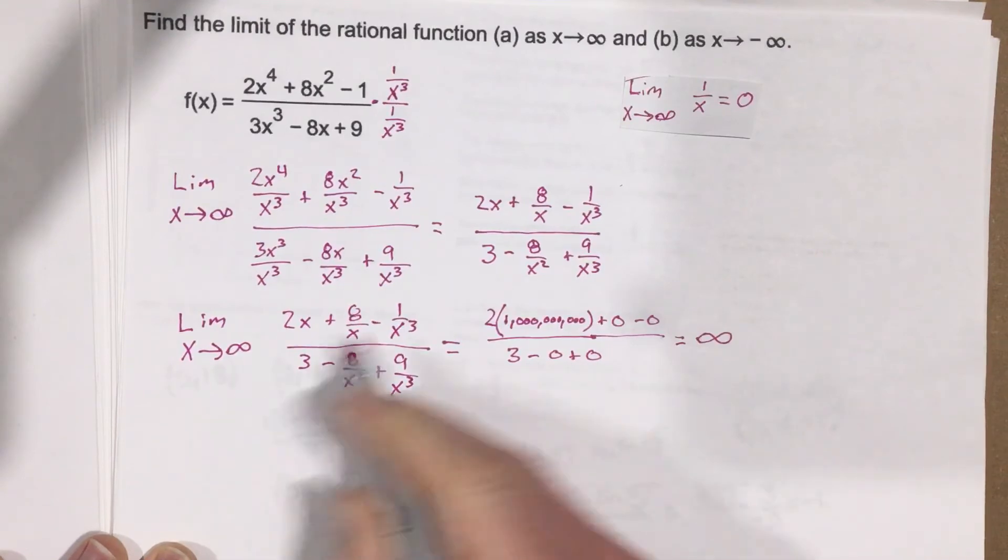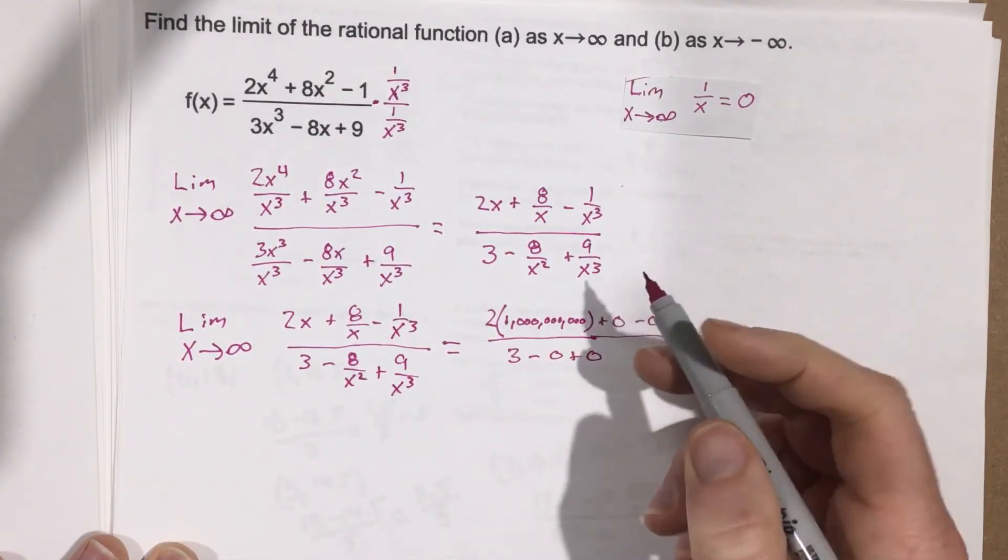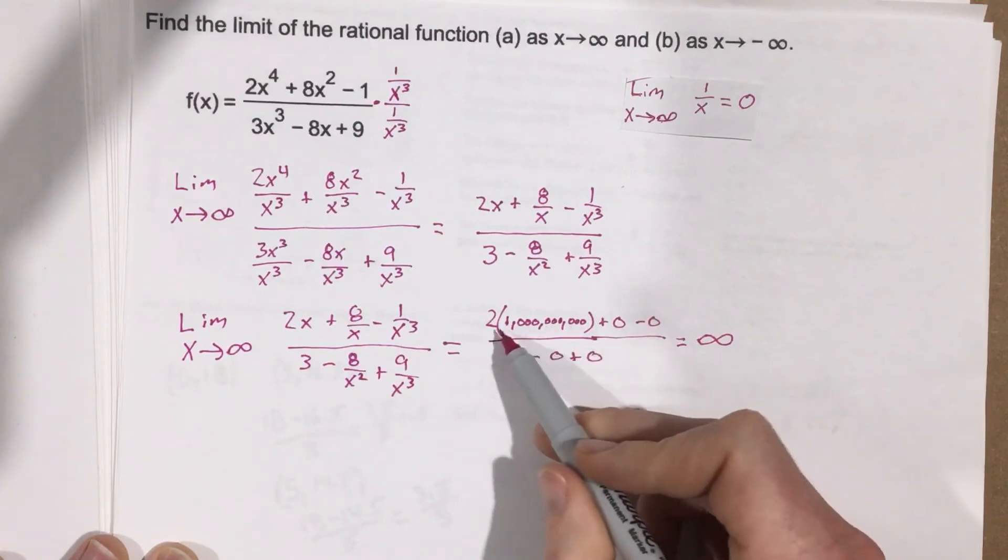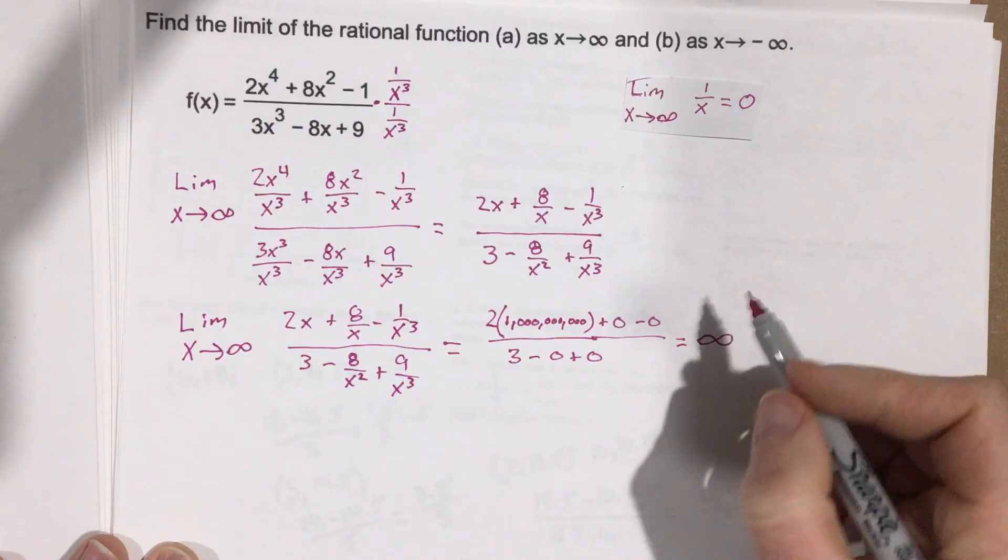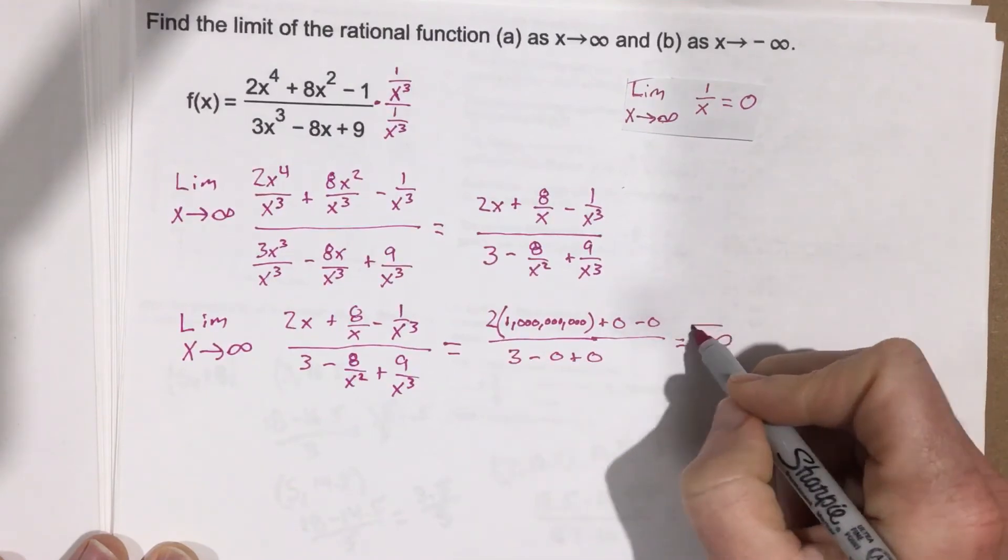So you can plug infinity in here. It's not really a good way to do the math, but 2 times infinity, you're just going to get infinity. Infinity divided by 3, you get infinity. So that's another way to kind of think about it.